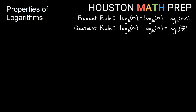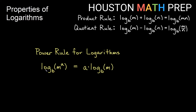We've covered the product rule — add between logs becomes multiply — and the quotient rule — subtraction becomes division. Now for the power rule: if I have log base b of something m raised to the power a, that equals a times log base b of m. The power inside the log moves out front as multiplication.